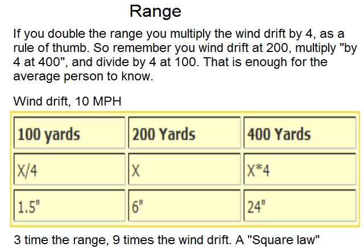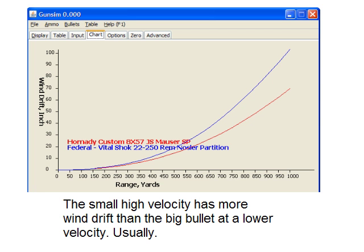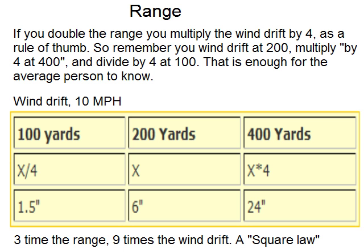Now, range. Doubling the range does not double the drift — it actually multiplies it by four. If you look at the previous graph, you see that the slope goes up with distance, so it gets worse than you think at longer range.